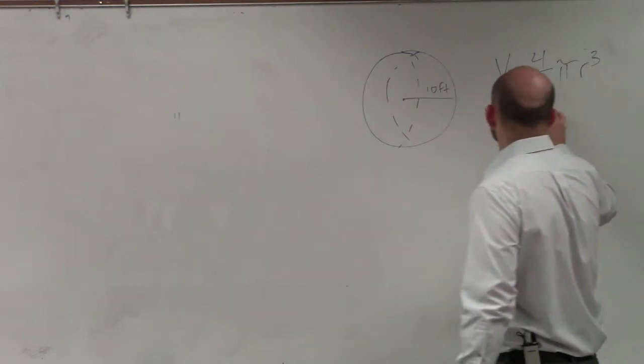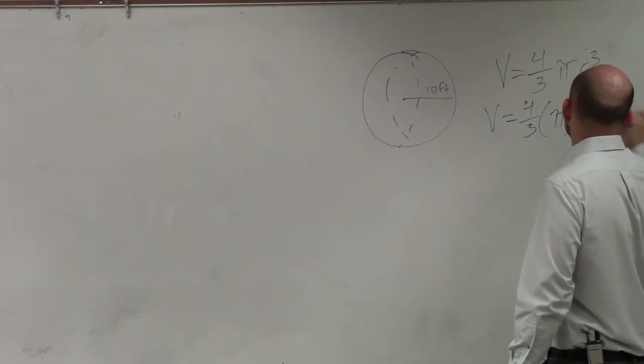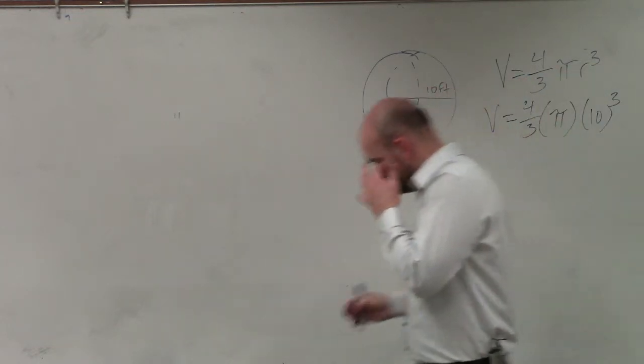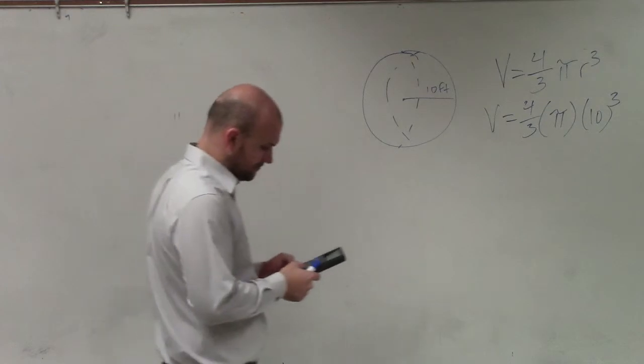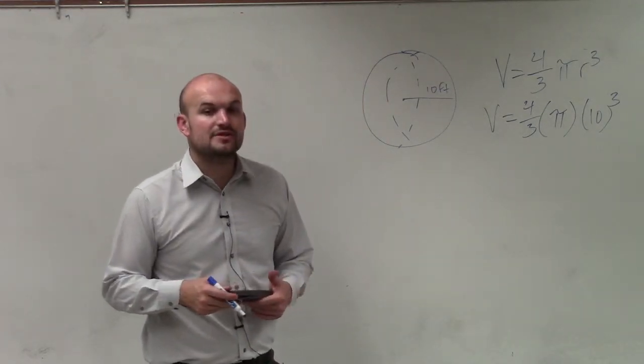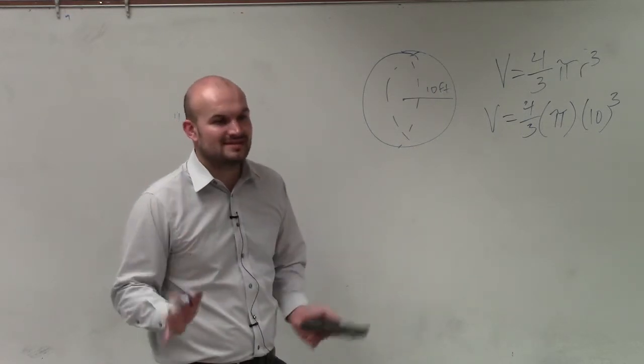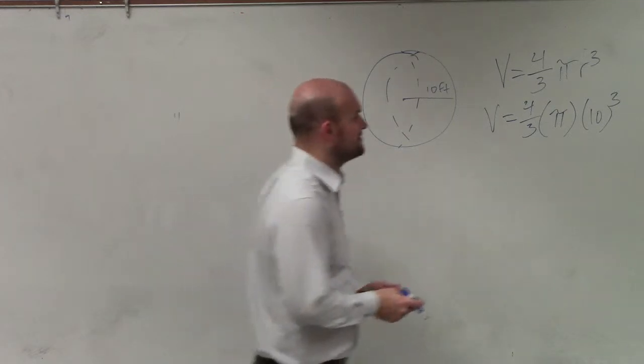So all I'm going to do is volume equals 4/3 times π times 10 cubed. So 10 cubed, 10 raised to the third power, is 10 times 10, which is 100, times 10, which is 1,000. Very good.